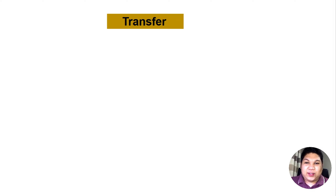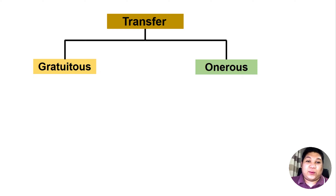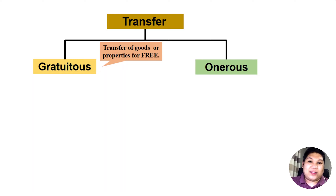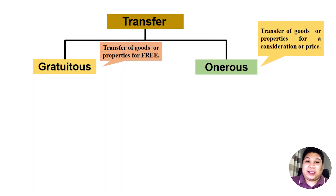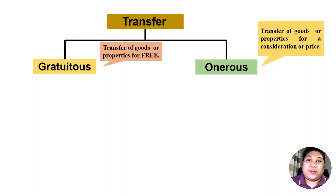As we have mentioned in our previous videos, there are different kinds of transfer. Transfer could be gratuitous or onerous. When we say gratuitous, this is a transfer of goods or properties for free, meaning without consideration on the part of the receiver. Whereas when we say onerous, it means a transfer of goods or properties with a consideration or price, such as in the case of sale or barter. So the main difference between onerous and gratuitous lies on whether there is a consideration that the receiver would have to give to the giver of the good or property.